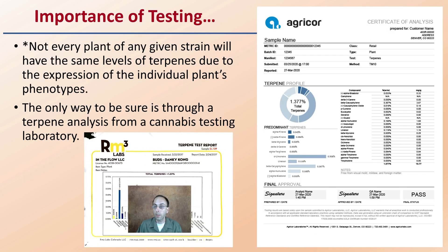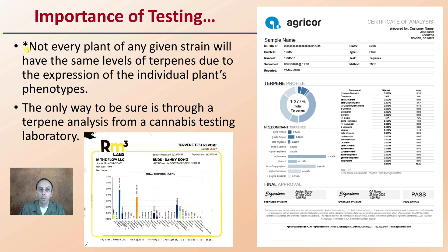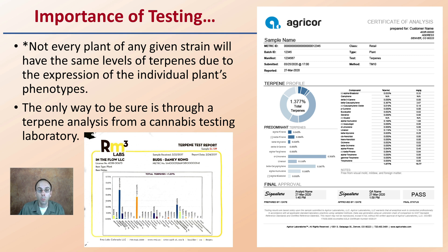This all comes back to the importance of testing. Not every plant in a given strain will have the same levels of terpenes due to individual plant phenotypes and the growing environment. The only way to be sure is through a terpene analysis from a cannabis testing laboratory. When purchasing, make sure you're getting a certificate of analysis — check the terpene profile and cannabinoids, but also ensure it's passing tests for heavy metals, pesticides, and microbiology to guarantee a clean product with your desired profile.